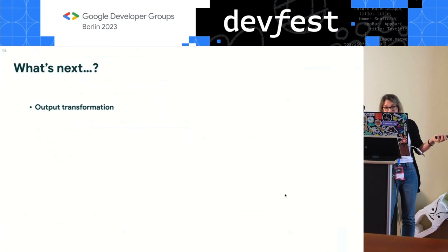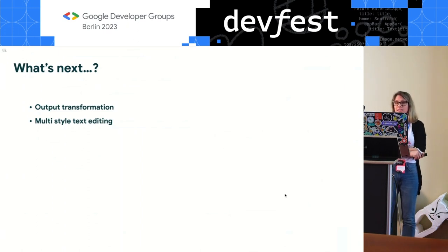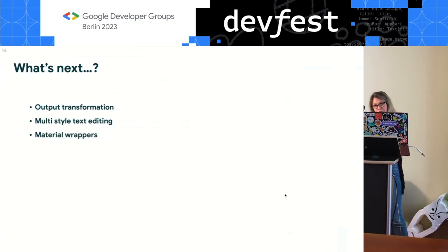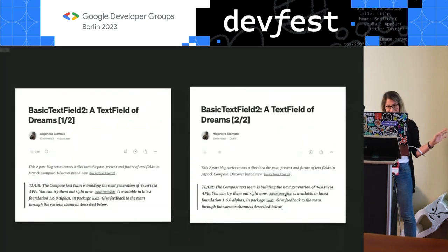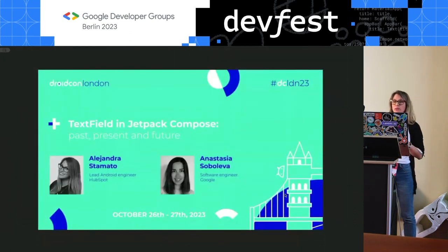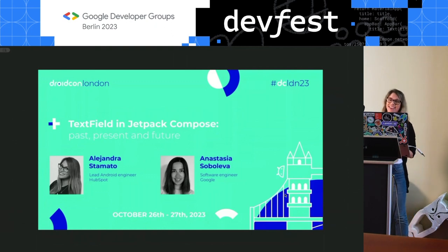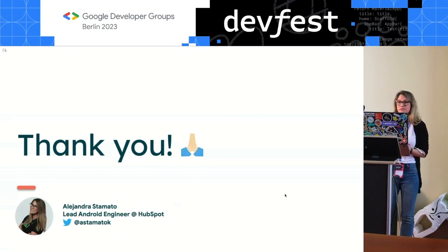What's next? Output transformation will be stabilized. Multi-style text editing is a very requested feature from BasicTextField1, and the team will be working on this next, plus material wrappers so you don't have to style everything yourself — something like OutlinedTextField2 will be coming on top of the current foundation layer. If you want to know more about all of this, we wrote a blog post — a much less fast version of everything I talked about in a two-part blog series. You can also watch this talk in a longer version from JetConf London that I gave with my colleague. That's it from me — if I don't catch you now, you can catch me later. Thank you so much, enjoy the rest of the conference.